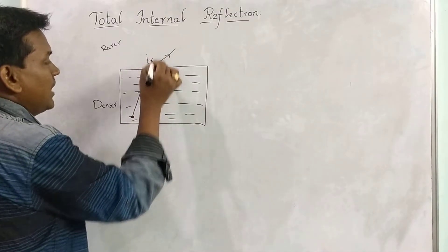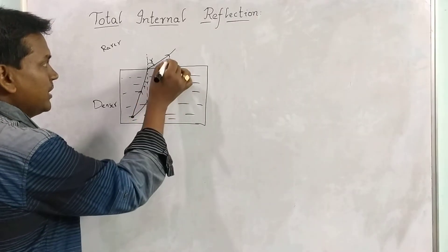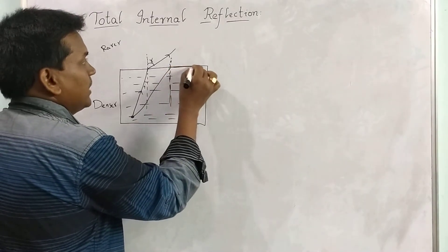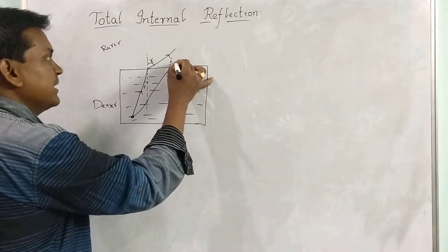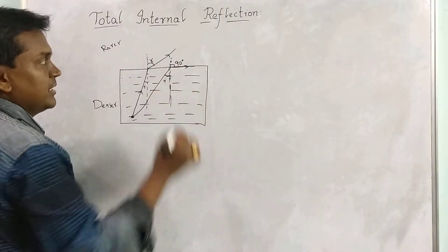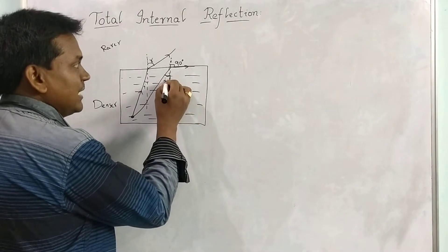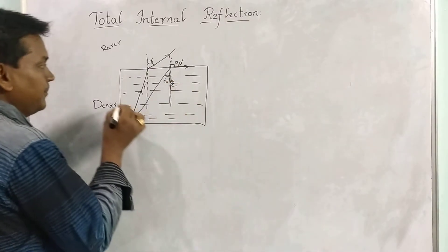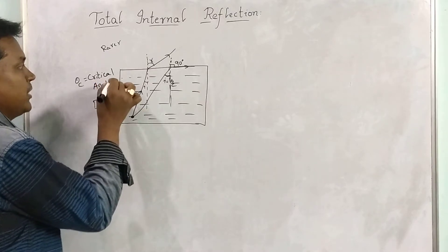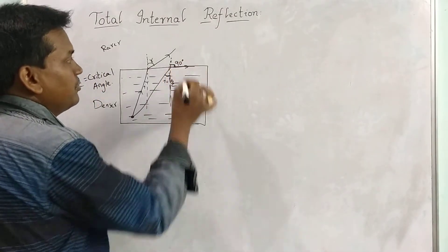The angle of incidence is i and the angle of refraction is r. Consider one more ray from the source — this ray travels through the interface making an angle of 90 degrees in the rarer medium. When the refracted ray makes 90 degrees with the normal in the rarer medium, the incident angle is called the critical angle (θc). For critical angle, the ray must travel from denser to rarer medium and make 90 degrees in the rarer medium.